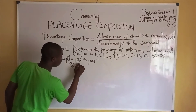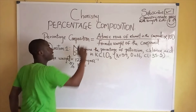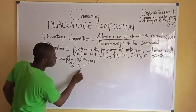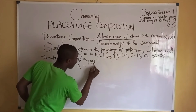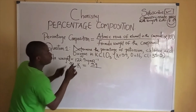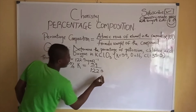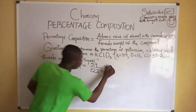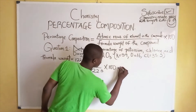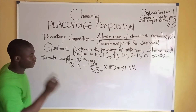The percentage composition of potassium: we already know the formula uses the atomic mass of the element in the compound. The atomic mass of potassium is given to be 39, divided by the formula weight of the compound KClO₃, which is 122.5, times 100. So the percent composition of potassium becomes 31.8%.